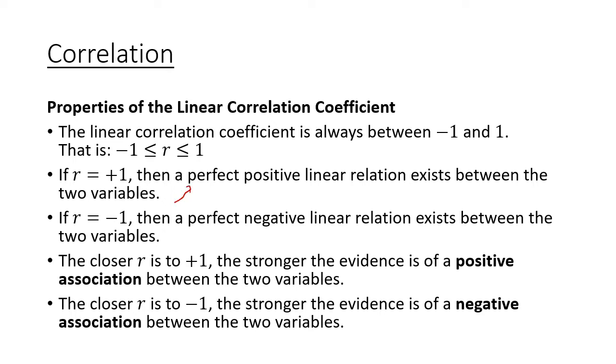If the correlation coefficient is positive one, then it's a positive linear relation where the line is a perfect line going up. If it's negative one, then it's a perfect line but going down. That doesn't have anything to do with the slope of the line going up or down; it's just saying that every point lies in a line.